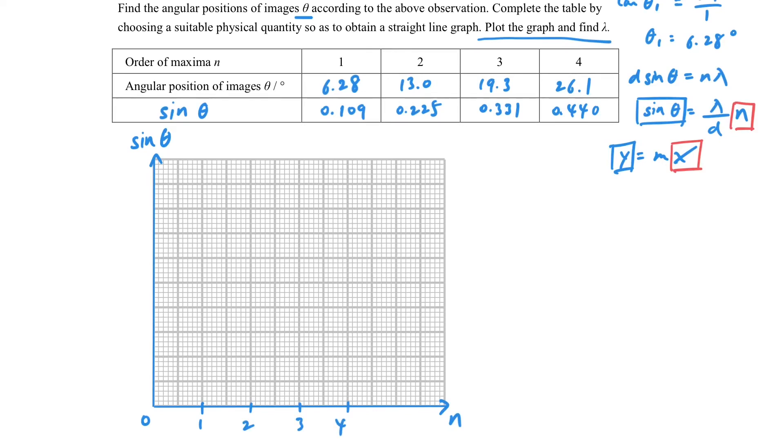When we're drawing the graph, then how can we find the lambda? Usually when we use the graph that means we are focusing on the slope. Here you can see that the slope is actually related to lambda, which is our unknown, and the d, which is just the constant. So we can plot the graph, find the slope, and then calculate the lambda.